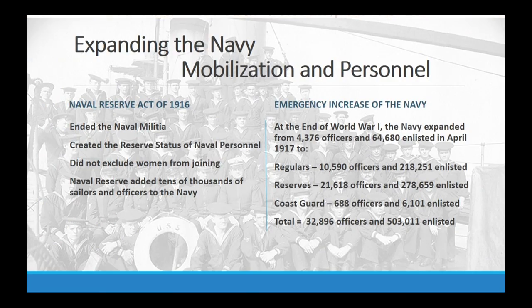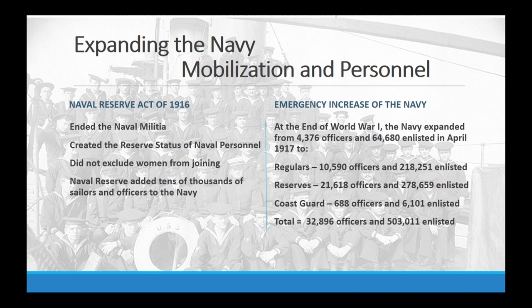At the start of the war, the Navy was a relatively small force with approximately 5,000 officers and 70,000 enlisted. Through the Naval Reserve Act of 1916, it expanded to about 33,000 officers and 500,000 enlisted. This expansion included female reservists for the first time — women were not prohibited from joining the Naval Reserve, and several hundred joined. They were legitimately part of the military, not just volunteers.